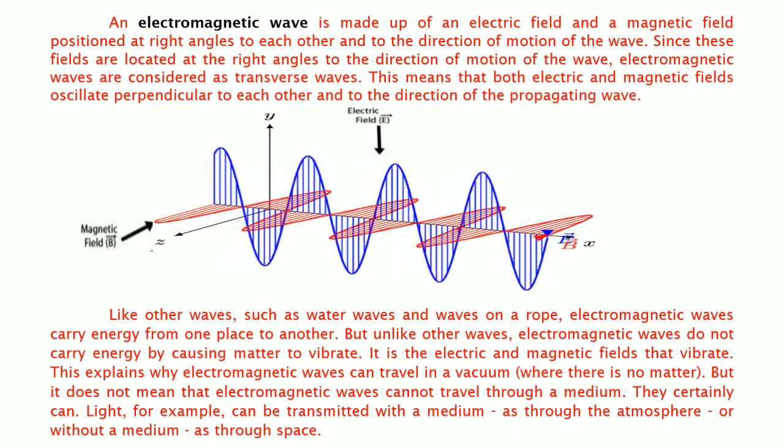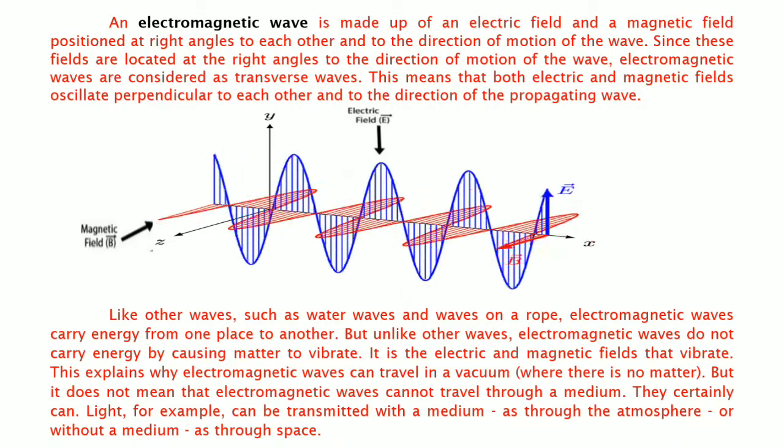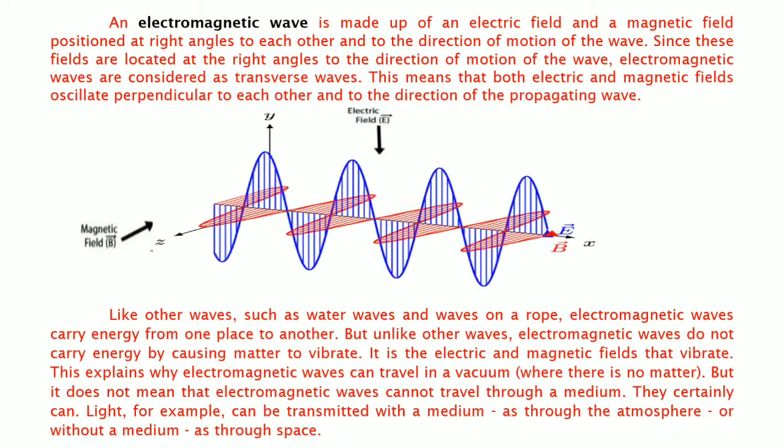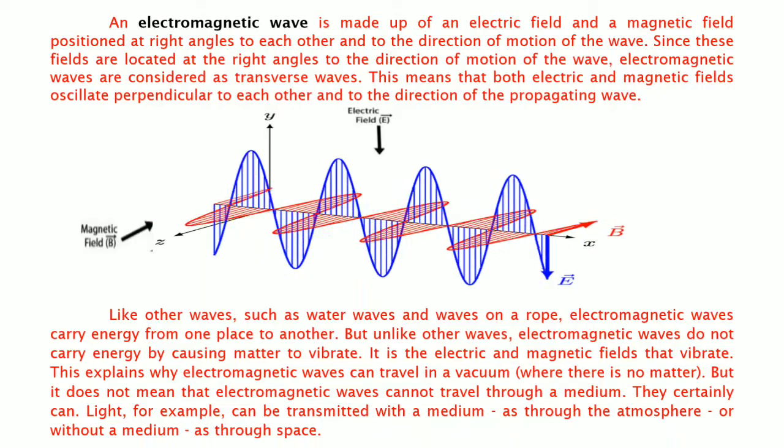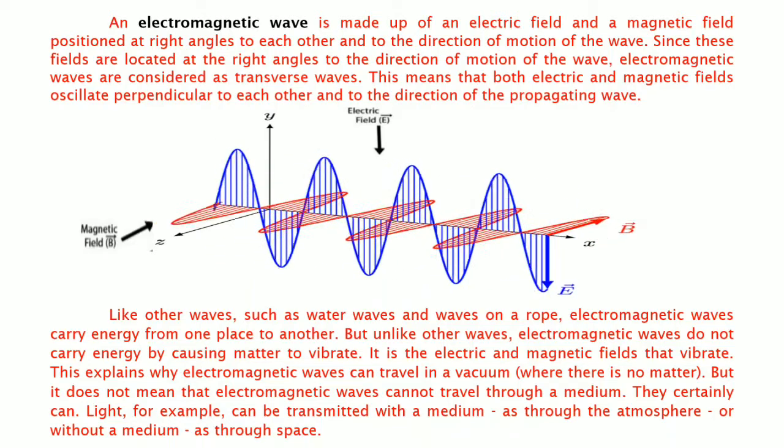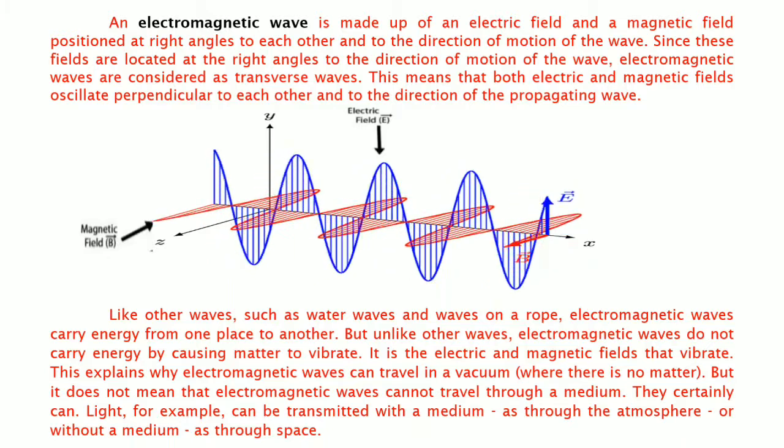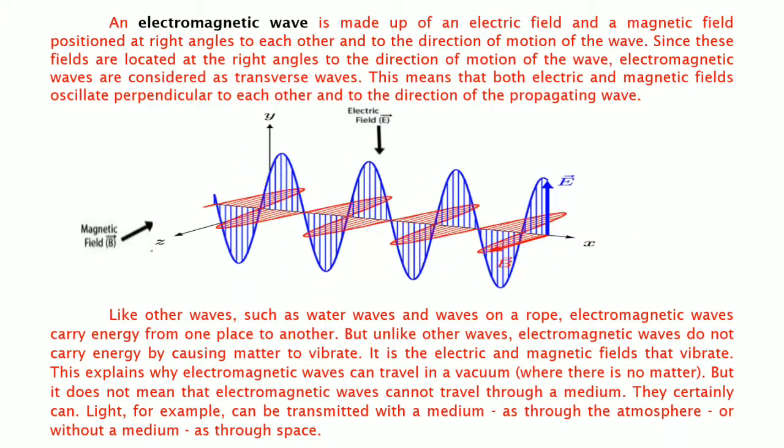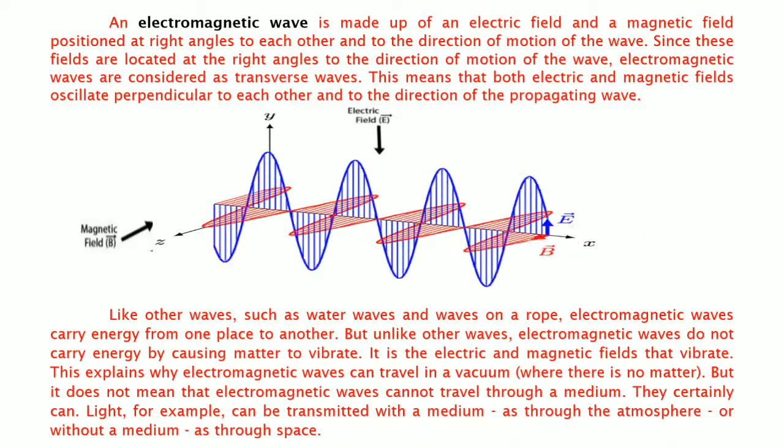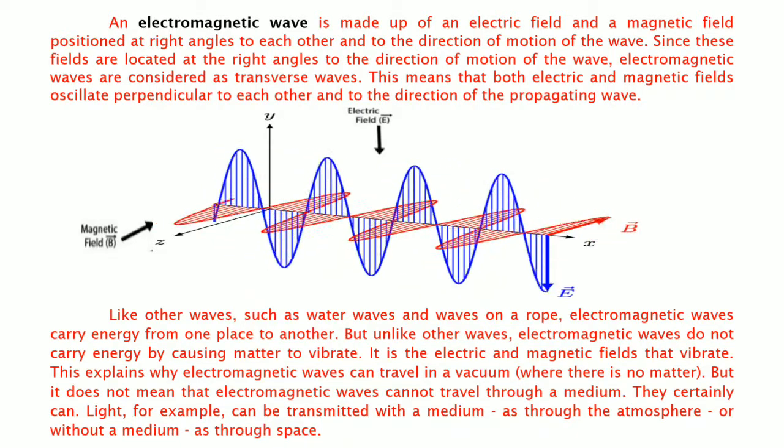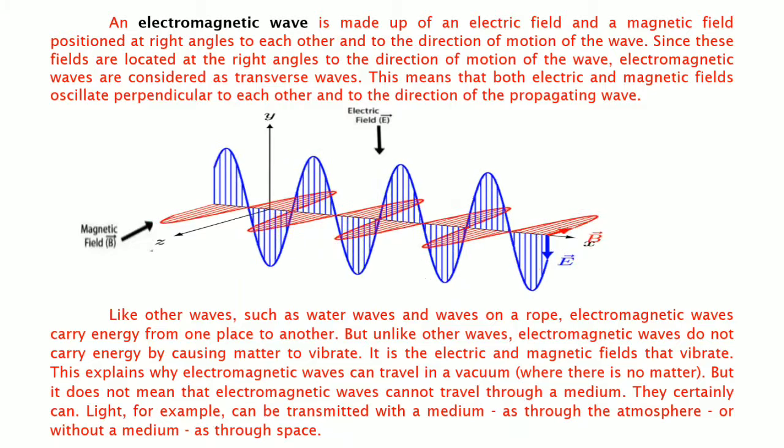Like other waves such as water waves and waves on a rope, electromagnetic waves can carry energy from one place to another. But unlike other waves, electromagnetic waves do not carry energy by causing matter to vibrate. It is the electric and magnetic fields that vibrate. This explains why electromagnetic waves can travel in a vacuum, but it does not mean that electromagnetic waves cannot travel through a medium. They certainly can.